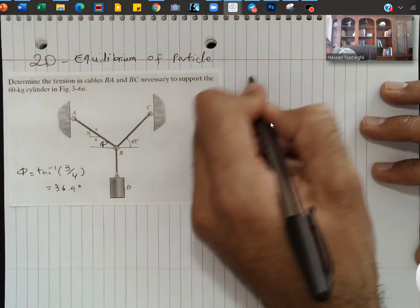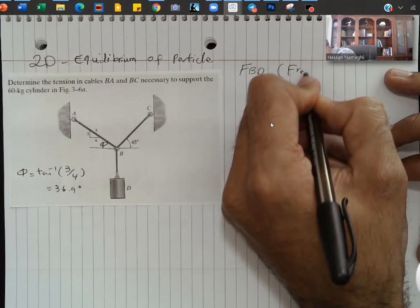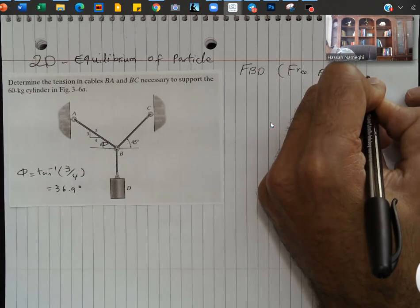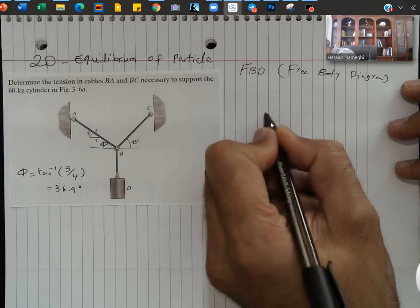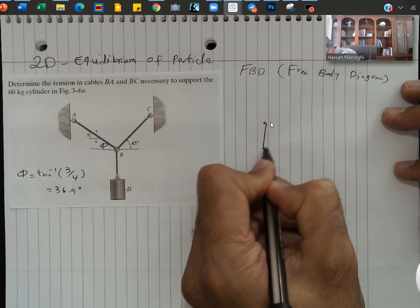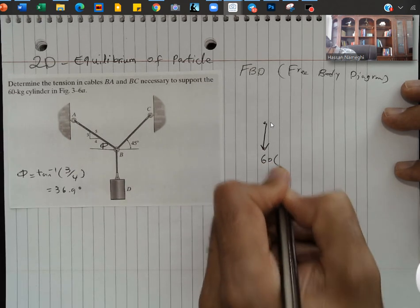Second step would be what we call a free body diagram. So I need to draw a free body diagram for this, and in this case if I look into point B, I would see there is a whole weight of 60 kilograms.